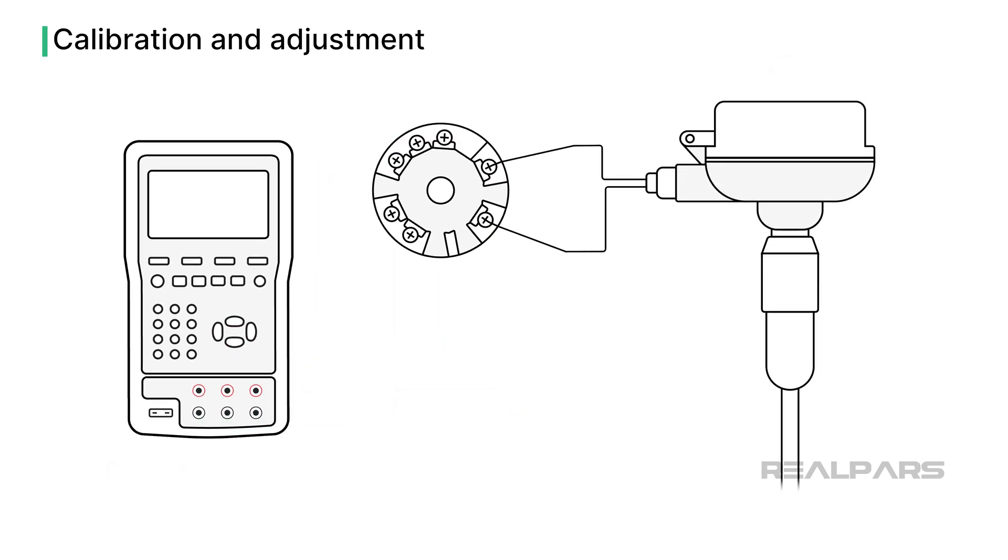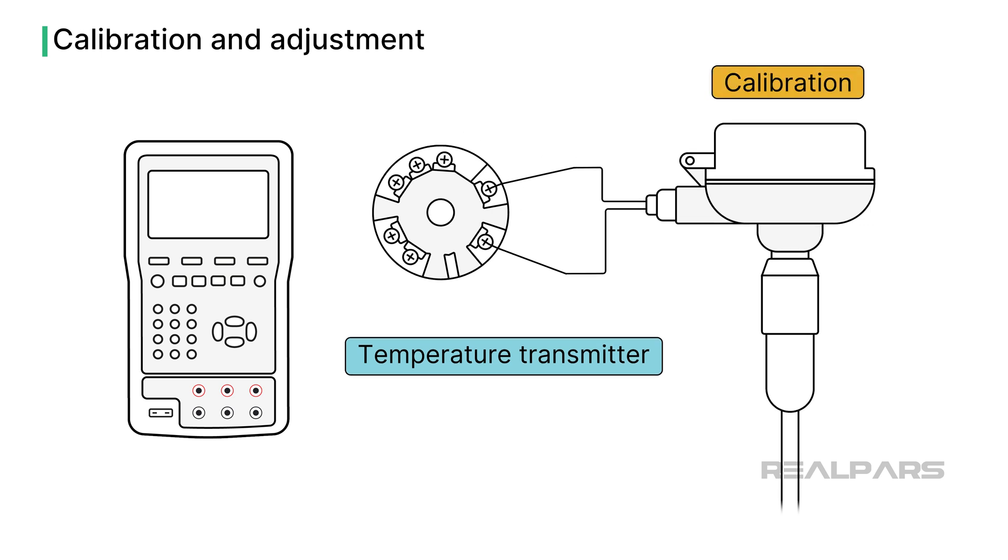Why do we calibrate instruments such as temperature transmitters? Regular calibration is necessary to maintain instrument reliability, as instruments can drift or degrade over time, producing erroneous values.